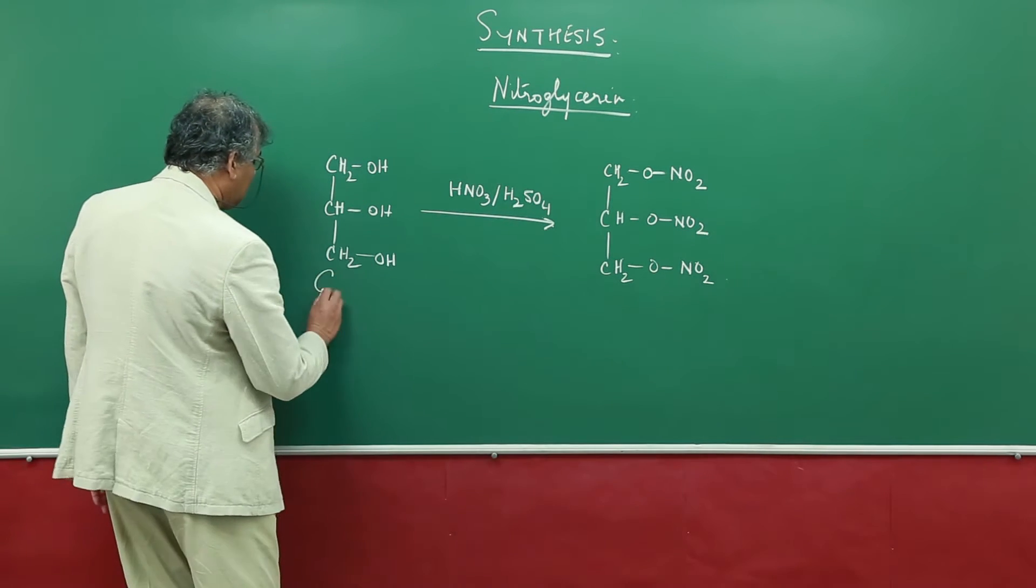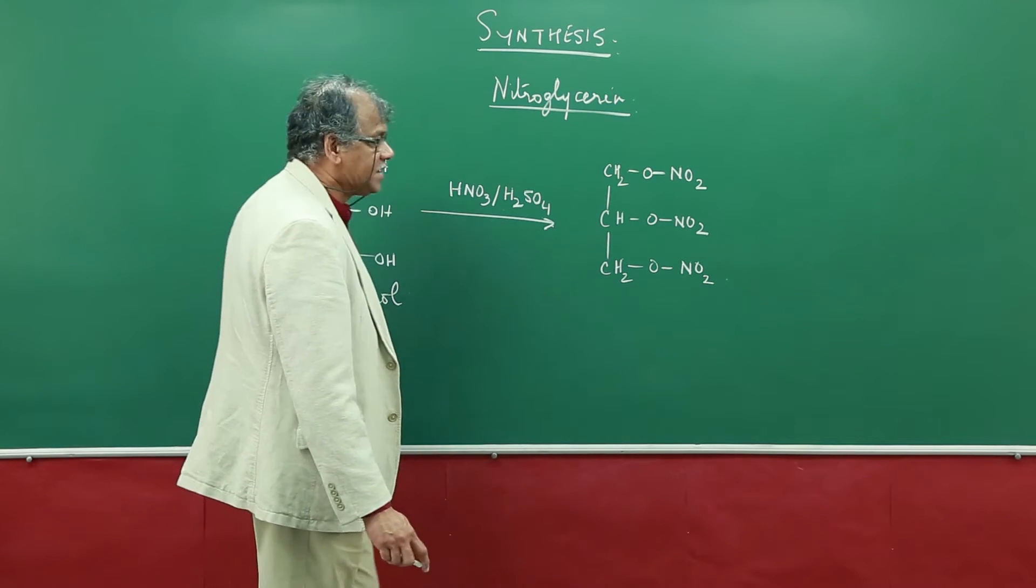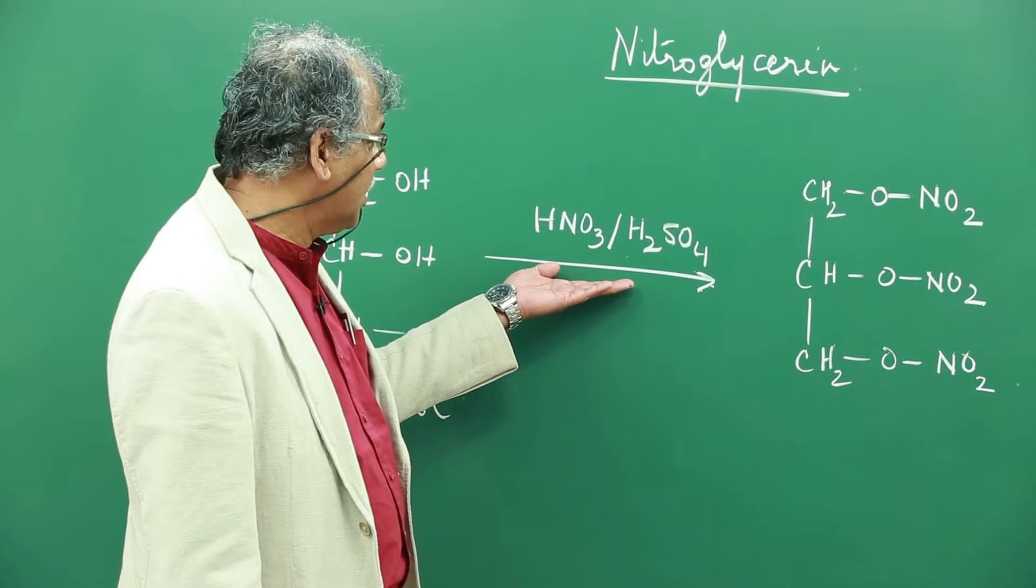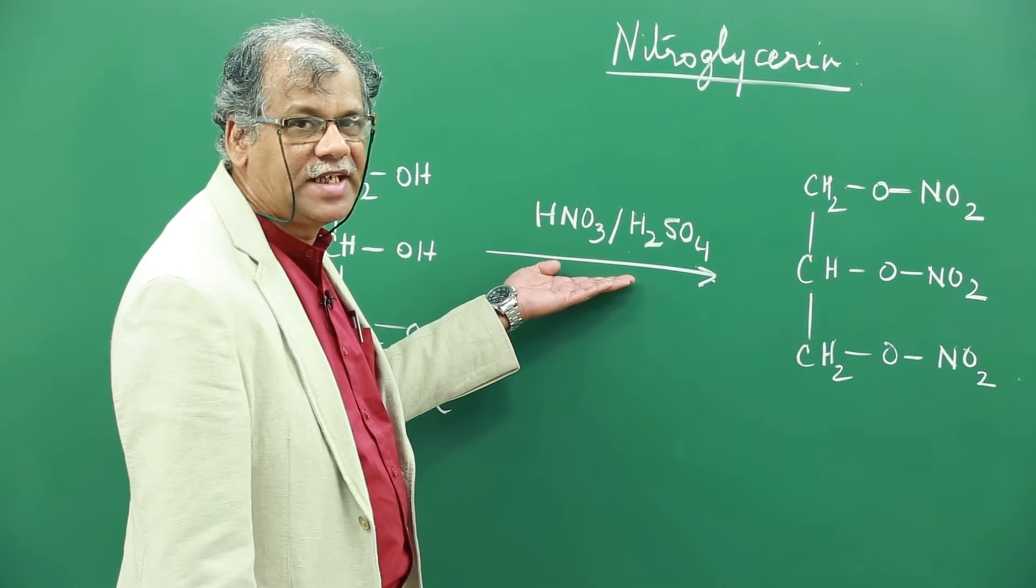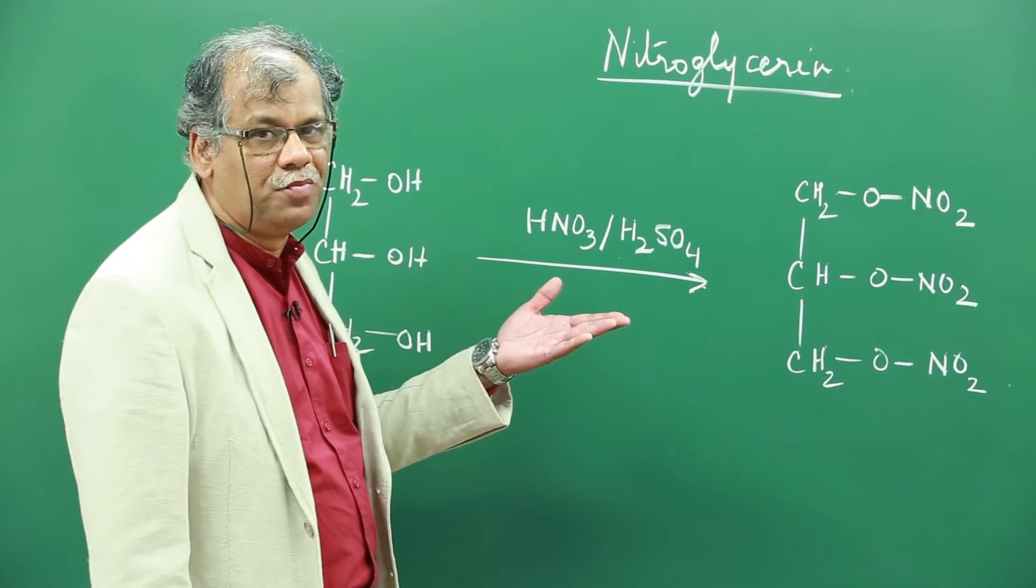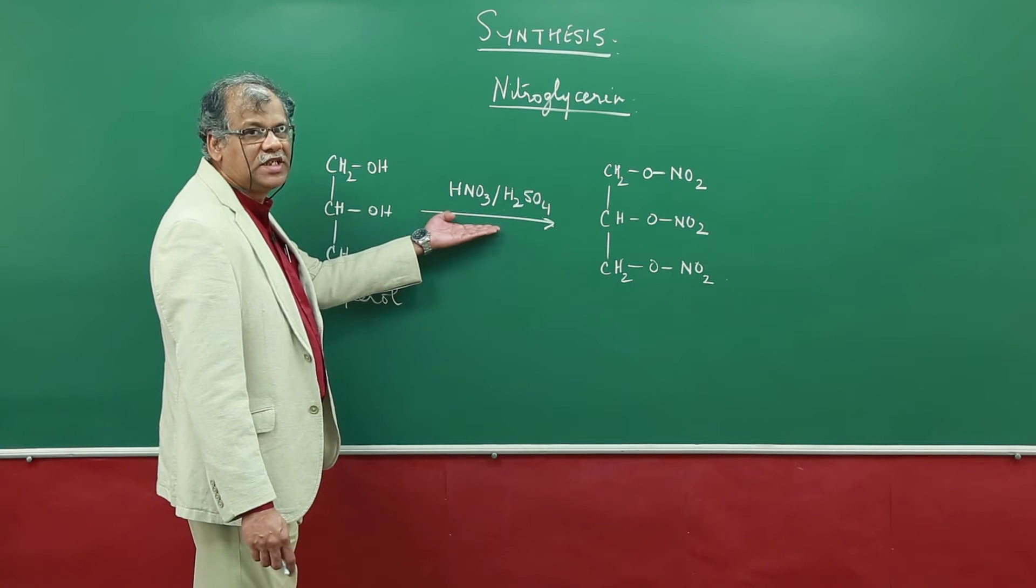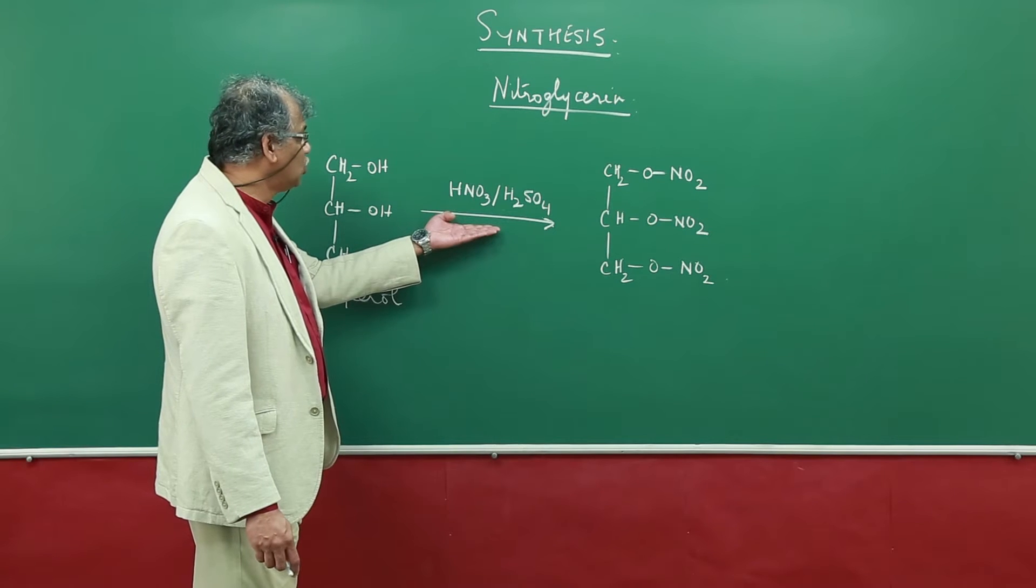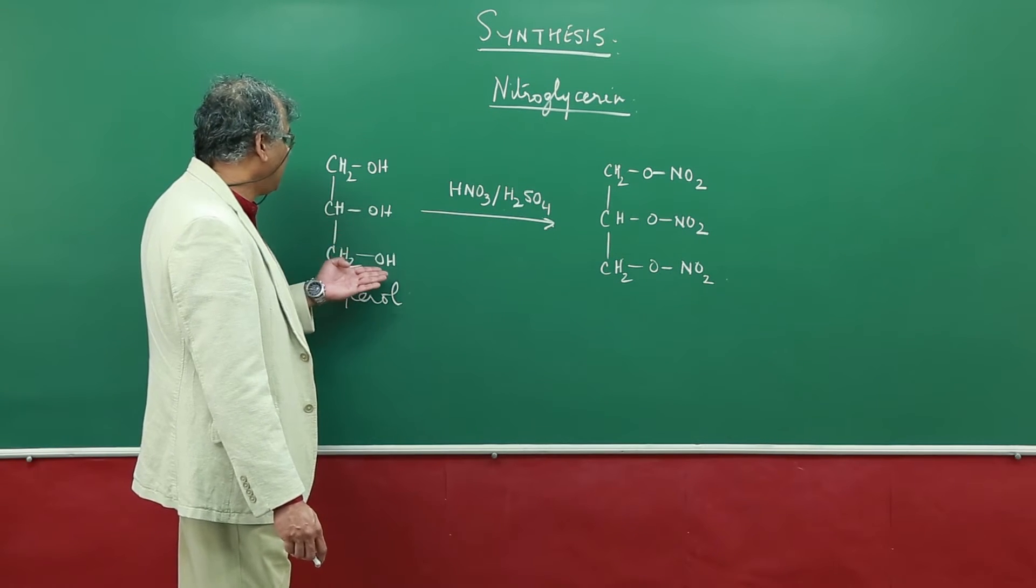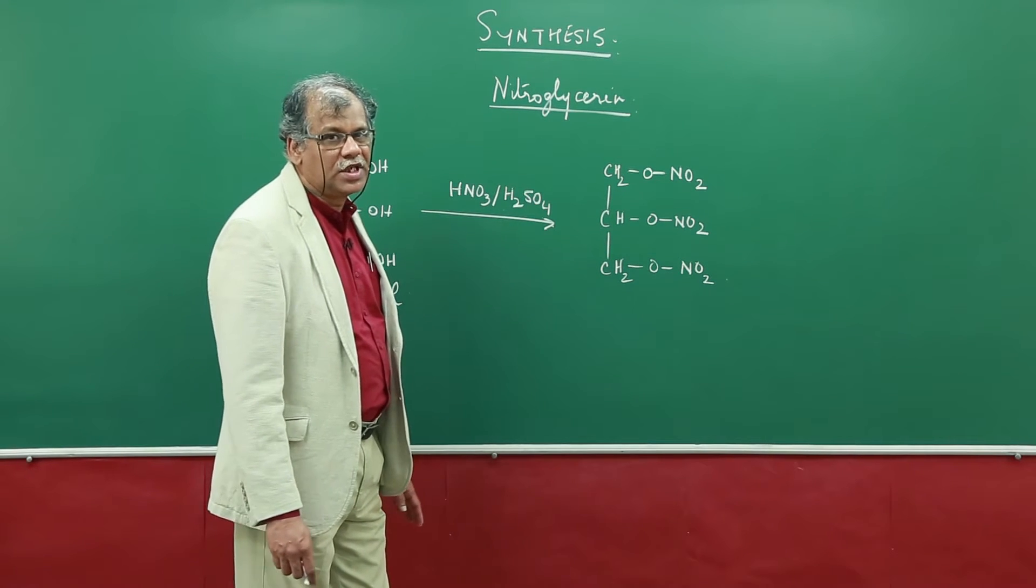This is glycerol and we use a mixture of nitric acid and sulfuric acid as the nitrating mixture. You would recall that a similar nitrating mixture is also used for nitrating benzene to make nitrobenzene. So this nitrating mixture makes the nitronium ion NO2+ which then attacks the three hydroxy groups to convert it into tri-nitroglycerol.